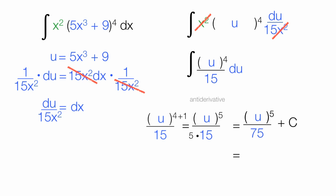Some number could be 5, 11, 12, but some constant number. Now I'm going to replace u with 5x cubed plus 9 right there divided by 75. Plus c is my answer.